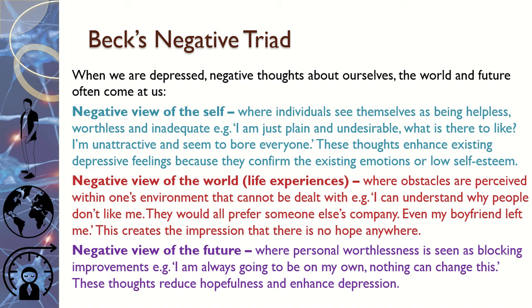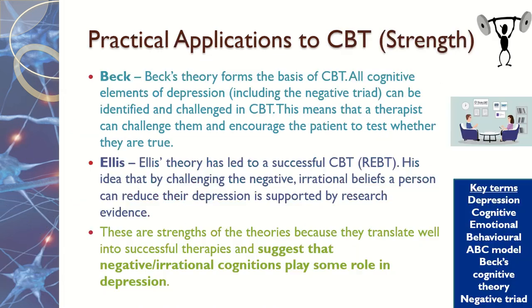Make sure you're clear on these two models — they are very similar, but be confident on both and remember which is which. Ellis' is the ABC model and Beck's is the negative triad. You could be asked to refer to either of them without the question naming them explicitly, so make sure you're confident on which one is which.